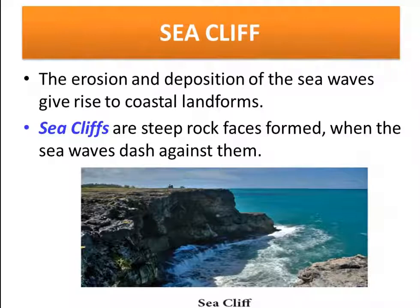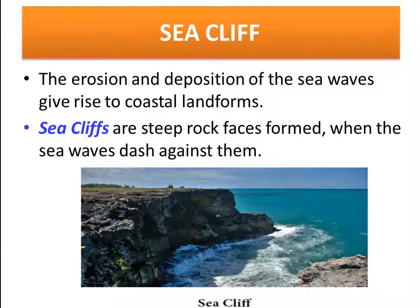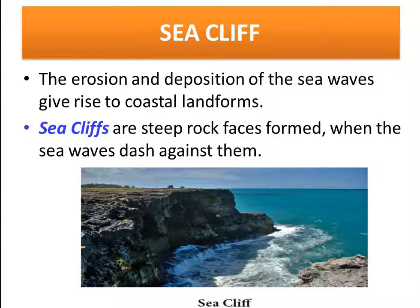Now we will see what is a sea cliff — spelled C-L-I-F-F. The erosion and deposition of sea waves give rise to coastal landforms. Sea cliffs are steep rock faces formed when sea waves dash against them. When the sea waves strike against the rock, it forms a cliff.